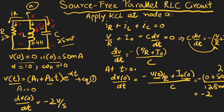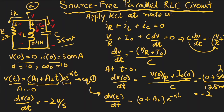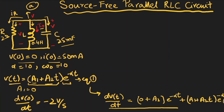Taking the derivative of equation 1 using the product rule: dv(t)/dt equals A₂·e^(−αt) plus (A₁ plus A₂·t)·(−α)·e^(−αt). At t equals 0, e^0 equals 1, A₁ equals 0, and the A₂·t term vanishes. This simplifies to dv(0)/dt equals A₂.